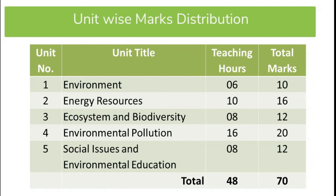Unit 5, the last unit, is Social Issues and Environmental Education. In this we discuss social issues like reduced purification of atmosphere, increasing levels of CO2, depletion of natural resources, and depletion of quality of environment due to urbanization, industrialization, and deforestation. These topics will be covered in 8 hours and 12 marks are allocated. In this way, to complete this course we require 48 hours, and 70 marks are distributed across 5 units.